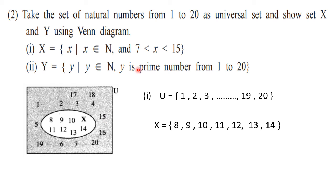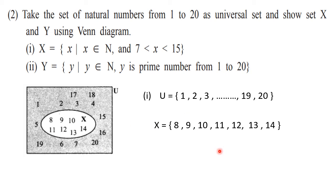Similarly, you have to draw for Y also — write U, then write set Y. Y contains prime numbers from 1 to 20. Remember, 1 is neither composite nor prime, so prime numbers start from 2. Write down all prime numbers from 2 up to 20 and draw the similar diagram for the second one.